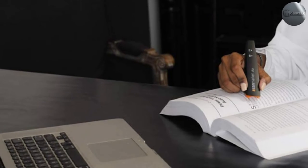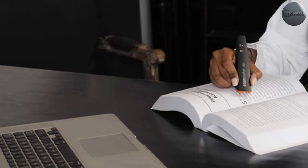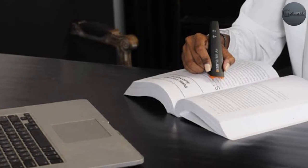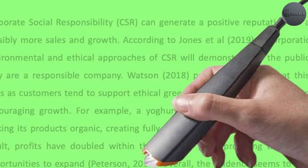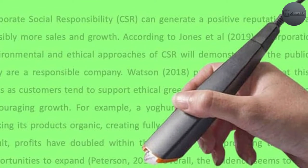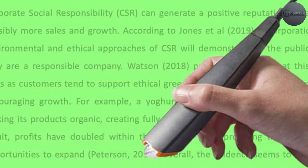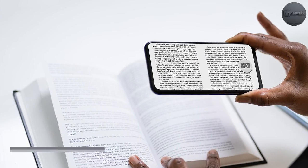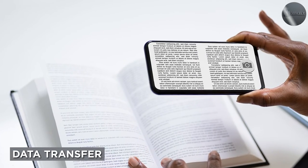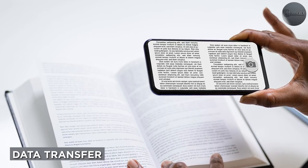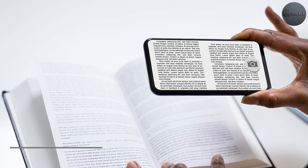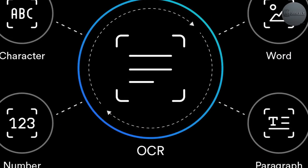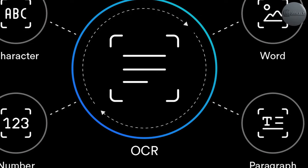OCR will easily transfer large amounts of information from paper to a database or electronic records. It generates digital documents faster than the normal keyboard inputting method and avoids the manual editing errors that occur during keyboard data entry. If you need to transfer information from paper documents into a database or other form of electronic record, using OCR can make the process much faster than entering it by hand.